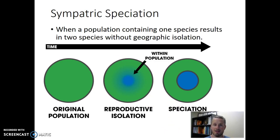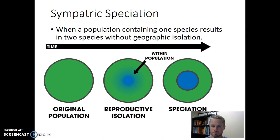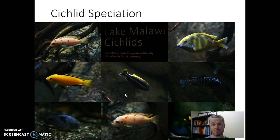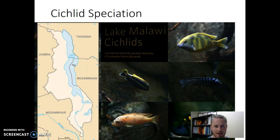Let's think about a real-world example of sympatric speciation in a cichlid population. Cichlids are a kind of fish found in a specific lake in Africa — Lake Malawi. In Lake Malawi, we can find all these different species of cichlids, all of which arose in that lake. They're native to Lake Malawi and are only found there. Lake Malawi is a pretty big lake in Africa near Zambia, Tanzania, and Mozambique, and all these cichlid species arose from one starting population.